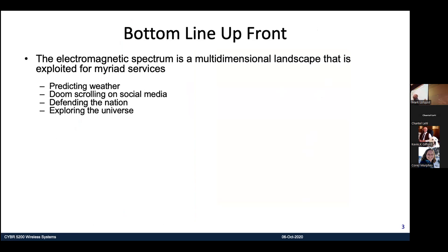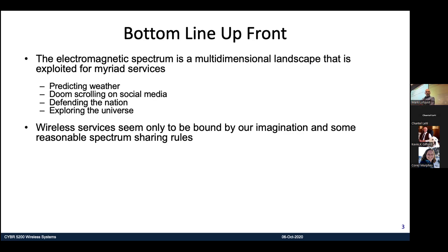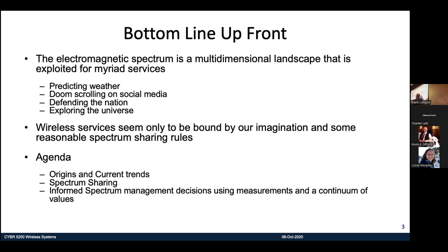The electromagnetic spectrum is a multi-dimensional landscape exploited by a myriad of services — man-made exploitation for predicting weather, doom-scrolling social media, defending the nation, detecting missiles, and exploring the universe with radio telescopes. The services and economies that have grown from wireless are only bounded by our imagination. The rest of the slide covers origins of spectrum, current trends, spectrum sharing, and informed spectrum management using measurements and continuums of values — the uncertainties and variabilities I mentioned.